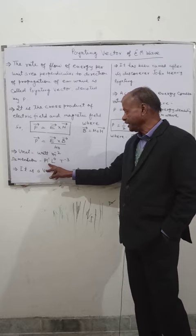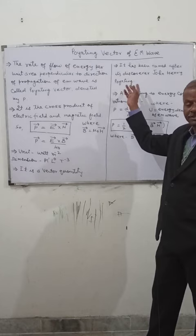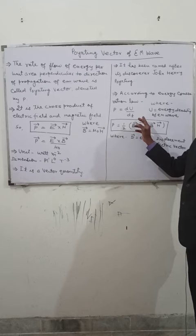It has been named after its discoverer John Henry Poynting. According to energy conservation law, this P equals DU upon DT. U is the energy density of the electromagnetic wave.